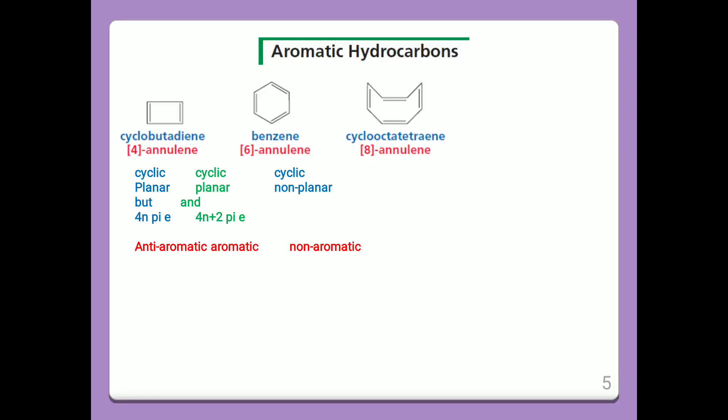Aromatic hydrocarbons. For example: cyclobutadiene, benzene, and cyclooctatetraene. Cyclobutadiene is a 4-annulene; benzene is a 6-annulene; cyclooctatetraene is an 8-annulene. The first one is cyclic and planar but has 4n pi electrons, so the compound is anti-aromatic. The second, benzene, is cyclic, planar, and has 4n+2 pi electrons — it is an aromatic compound. The third, cyclooctatetraene, is cyclic but non-planar, so it is non-aromatic.